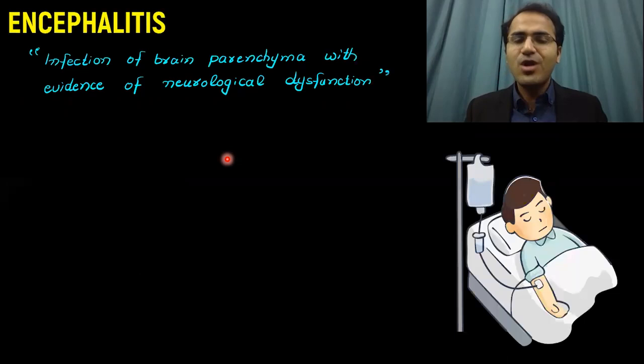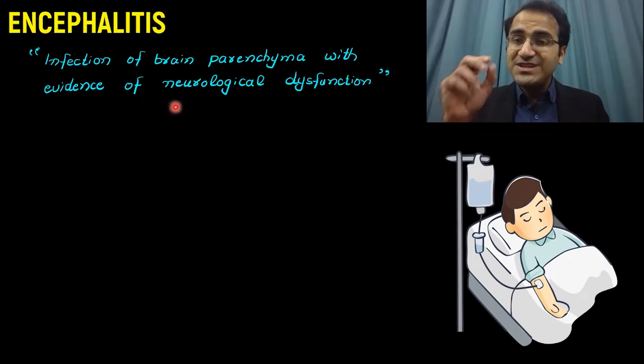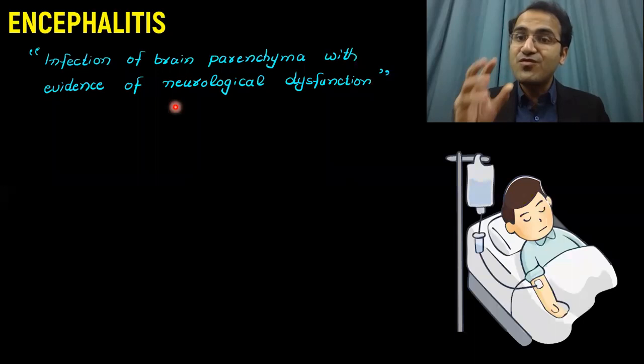First of all, what is Encephalitis? Encephalitis is basically infection of the brain parenchyma with the evidence of neurological dysfunction. There is infection of the brain parenchyma, brain tissue, and there is evidence of neurological dysfunction. There are neurological deficits present with it.